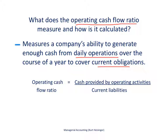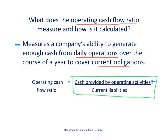The formula for the operating cash flow ratio starts with cash provided by operating activities — the top part of the statement of cash flows — which indicates the cash we generate from the daily operations of the business. We divide that by current liabilities from the balance sheet — liabilities we have to pay off within a year. A ratio higher than one indicates that we generate enough cash from operating activities to cover our current liabilities.